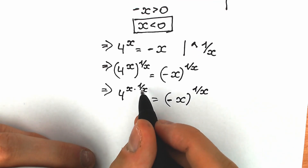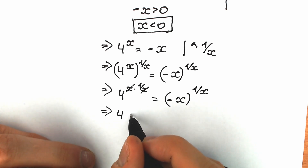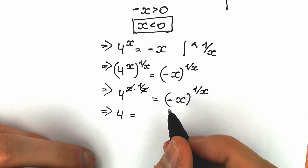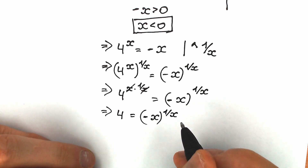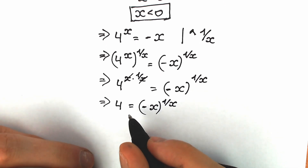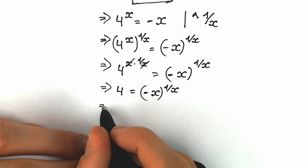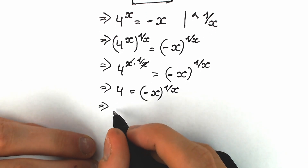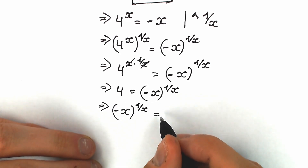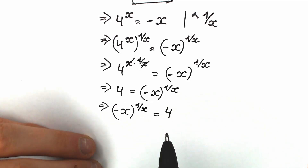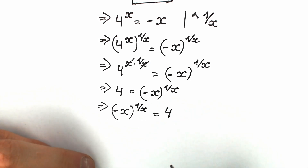Since x times 1 over x cancels to 1, on the left side we are left with only 4. On the right side we keep minus x to the power 1 over x. Preferring constants on the right and variables on the left, we swap sides: minus x to the power 1 over x equals 4. So we have our variable expression on the left side and our constant 4 on the right side.